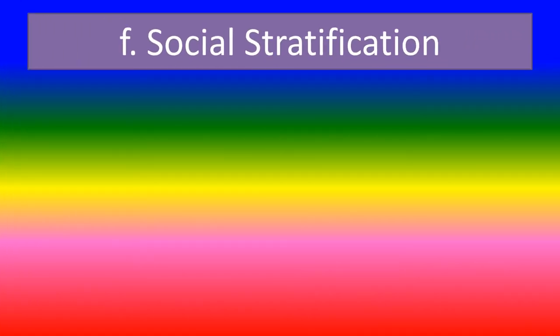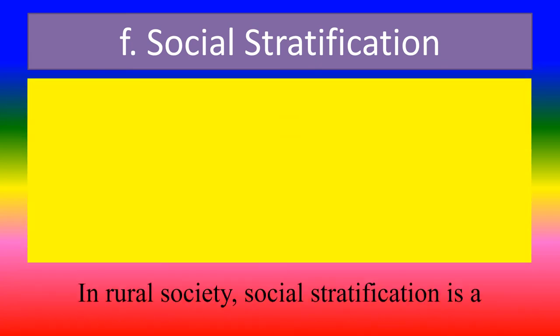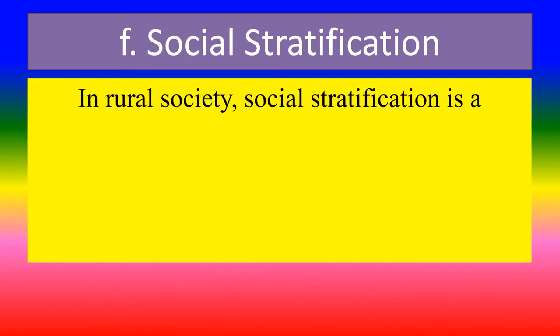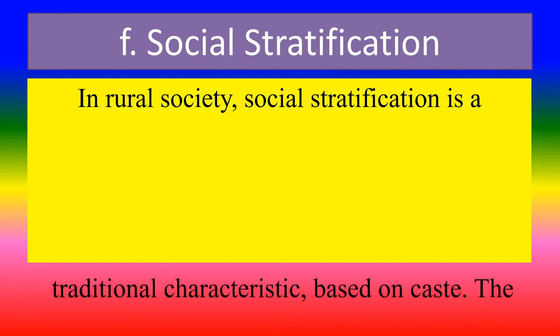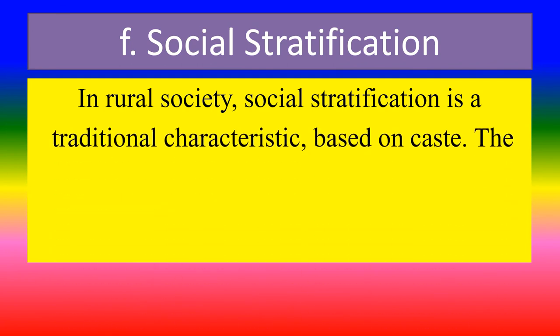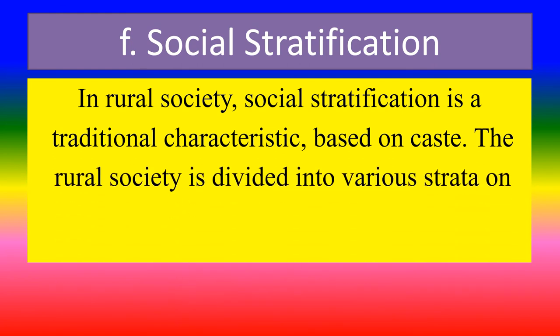E. Homogeneity of population: the village communities are homogeneous in nature. Most of their inhabitants are connected with agriculture and its allied occupations, though there are people belonging to different castes, religions and classes. F. Social stratification: in rural society, social stratification is a traditional characteristic based on caste. The rural society is divided into various strata on the basis of caste.